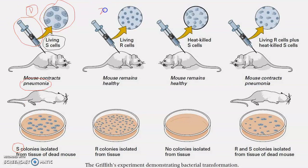In the second step, Frederick Griffith injected living R-type (rough) bacteria into a healthy mouse. Since these R bacteria are non-pathogenic, the mouse did not develop any pneumonia. R-type colonies were isolated from the tissues of the mouse. So in the second step, he injected R-type bacteria and finally isolated R-type bacteria.